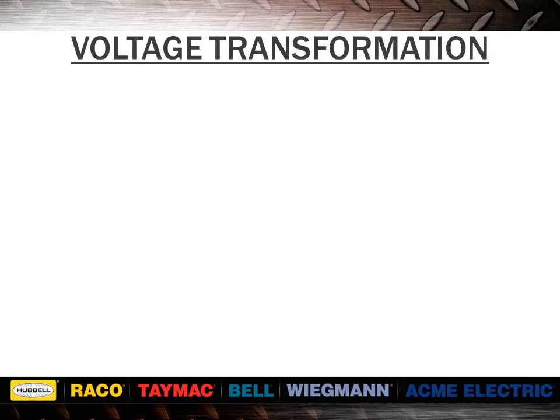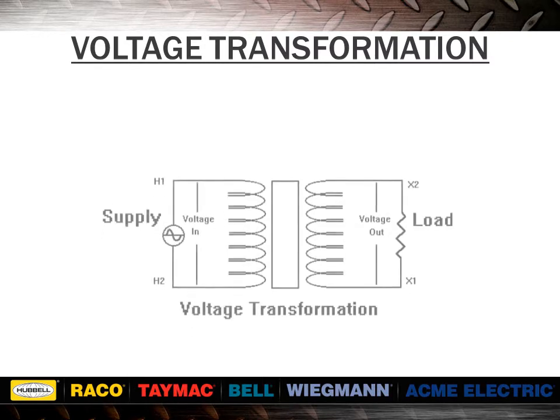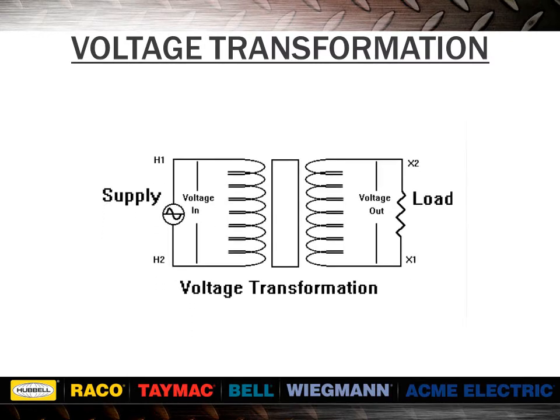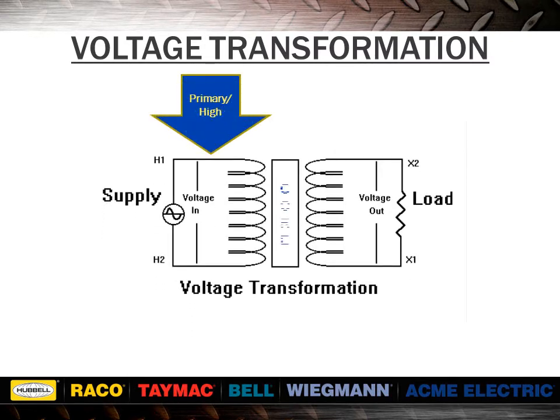When voltage is applied to one coil, usually called the primary, it magnetizes the iron core, which induces a voltage in the other coil, usually called the secondary.